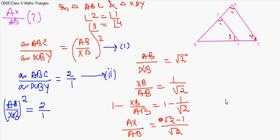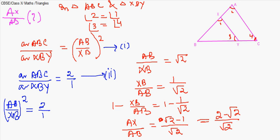To rationalize, multiply numerator and denominator by √2: AX/AB = (√2 × √2 − 1 × √2) / (√2 × √2) = (2 − √2)/2. So the final answer is AX/AB = (2 − √2)/2.